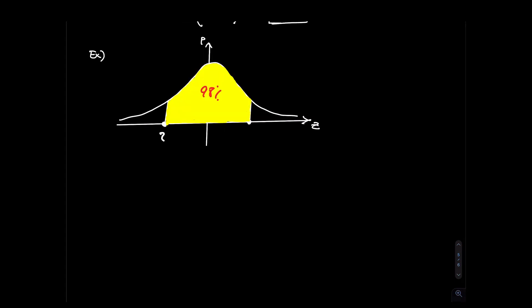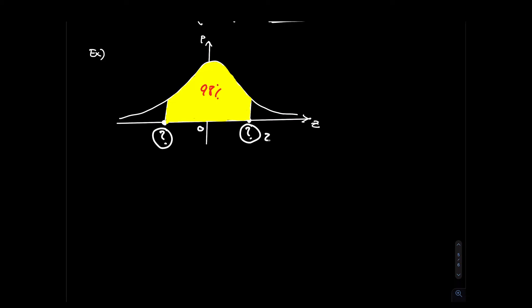Let's say the area in the middle is 98 percent, and I'm asking you to find these two z-values. The middle of the z-axis is zero, so I'm looking for a negative z-value on the left and a positive z-value on the right. Since this is a symmetric distribution, as soon as I find one of them, the other is the same with the opposite sign. To find a z-score, Excel needs the probability to the left, but the area to the left of the upper z-value doesn't go all the way to the left — it stops somewhere.